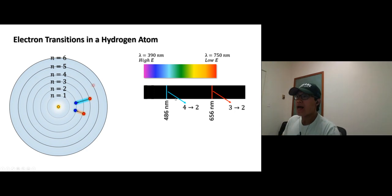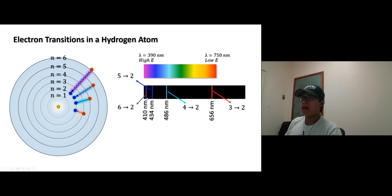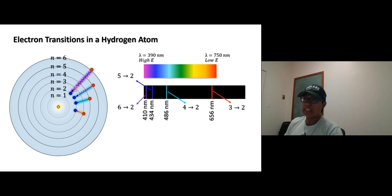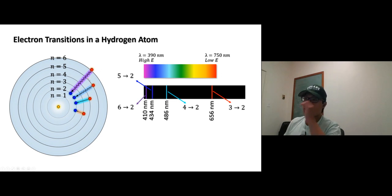From level five to two, that's blue, and from level six to two, that's violet. That's why you never see hydrogen's light as a continuous rainbow band — you see it as discrete lines, because there are specific energy levels and only specific amounts of energy are released. This shows that energy is quantized — it can't be just any number.